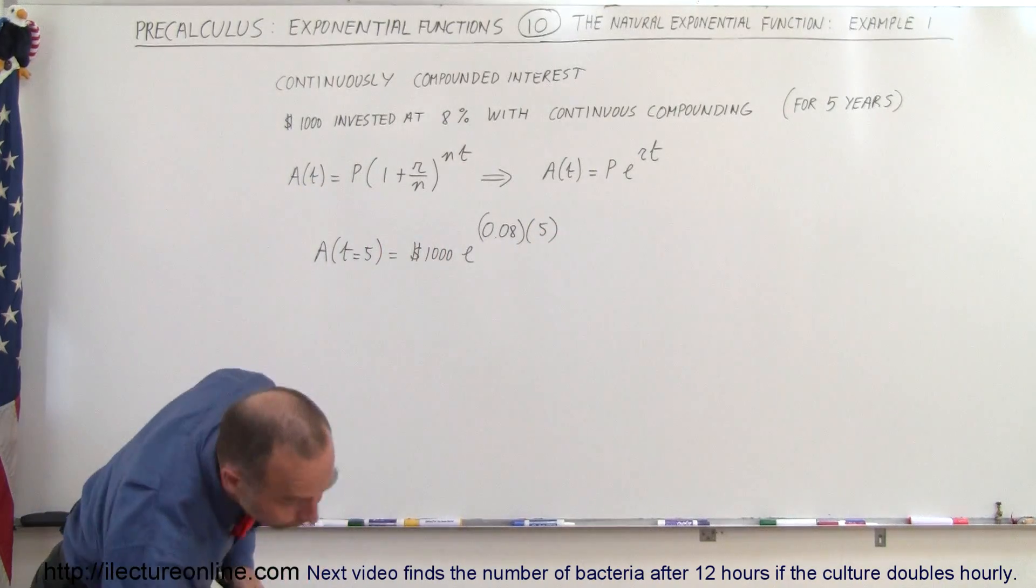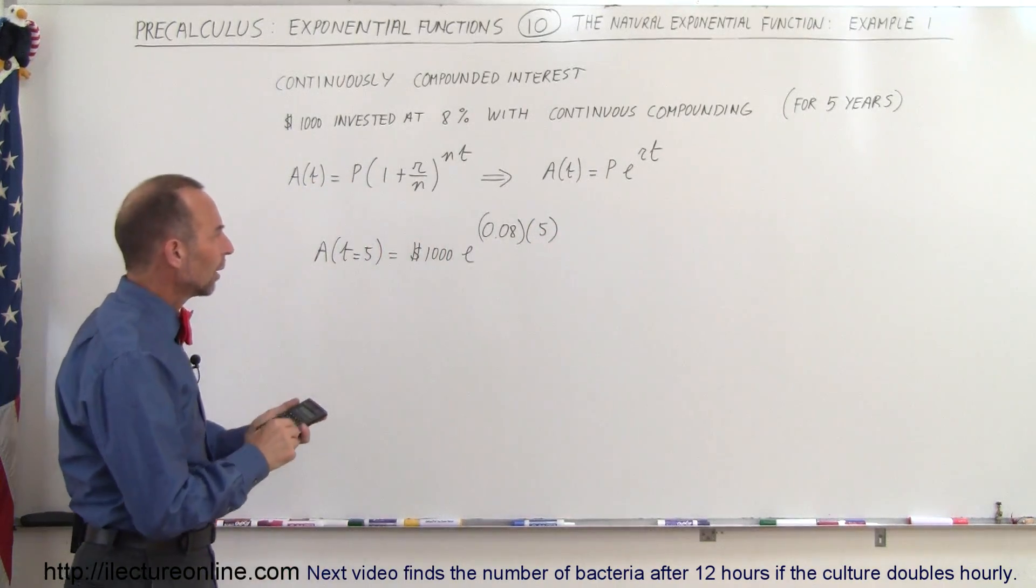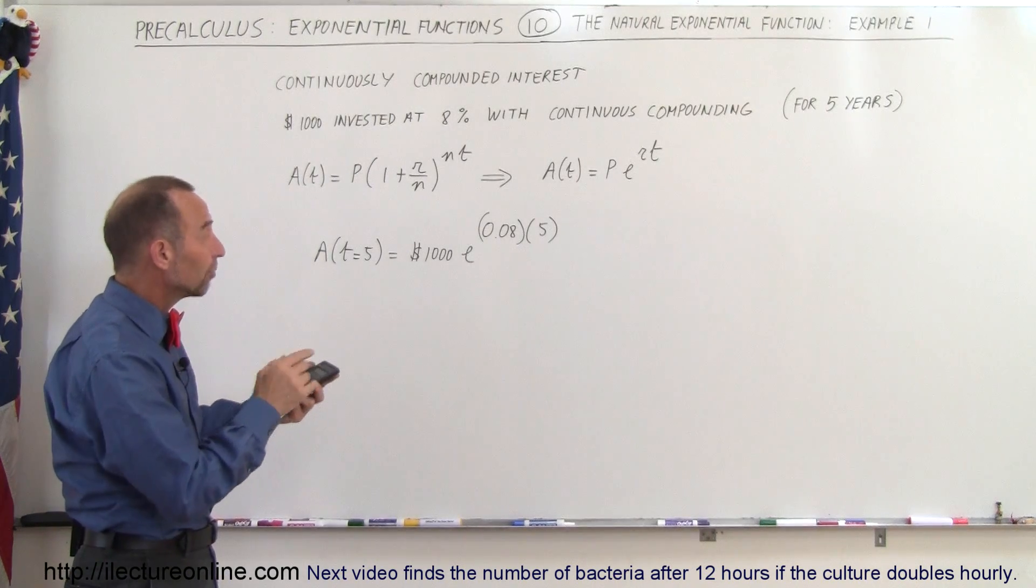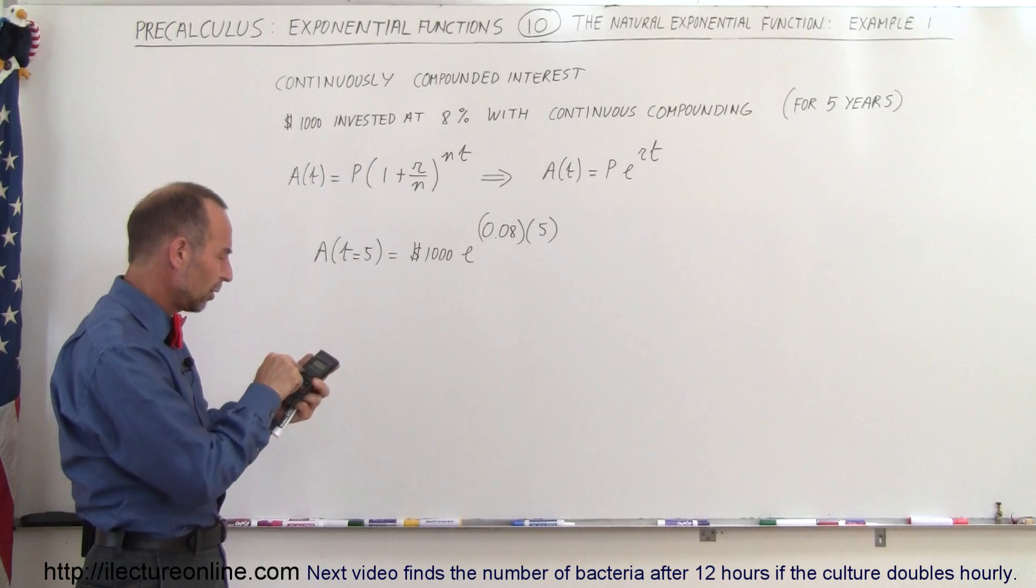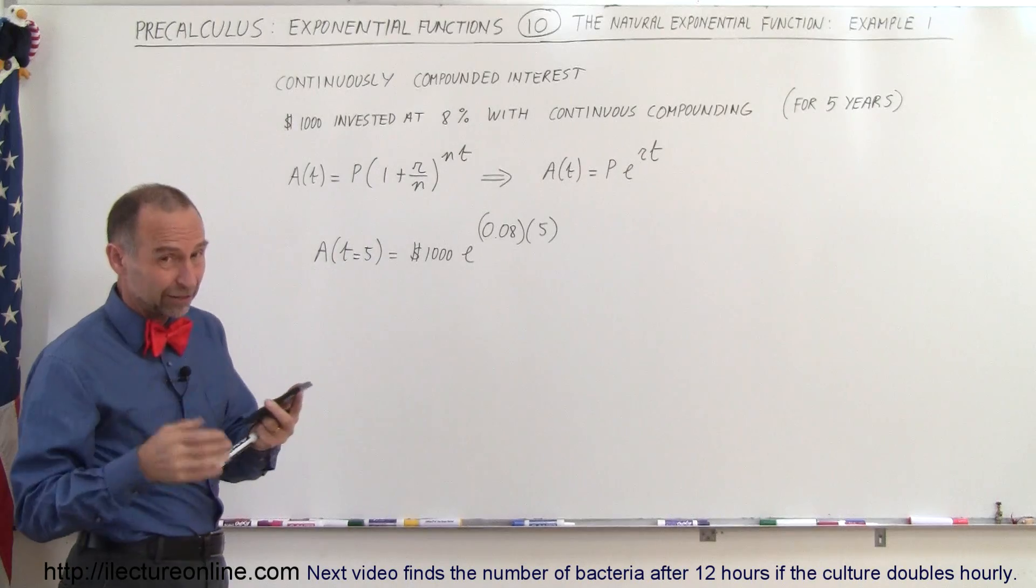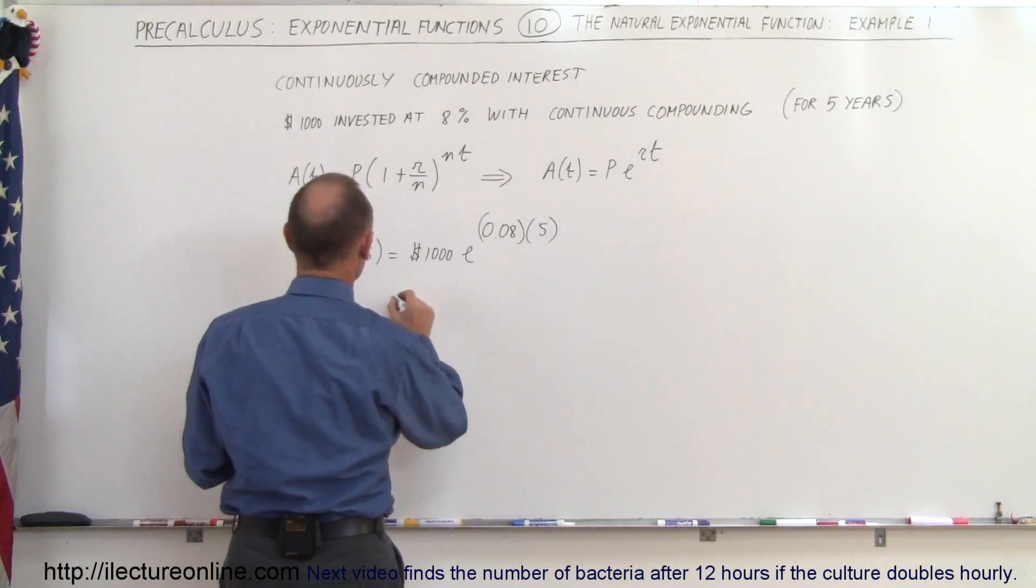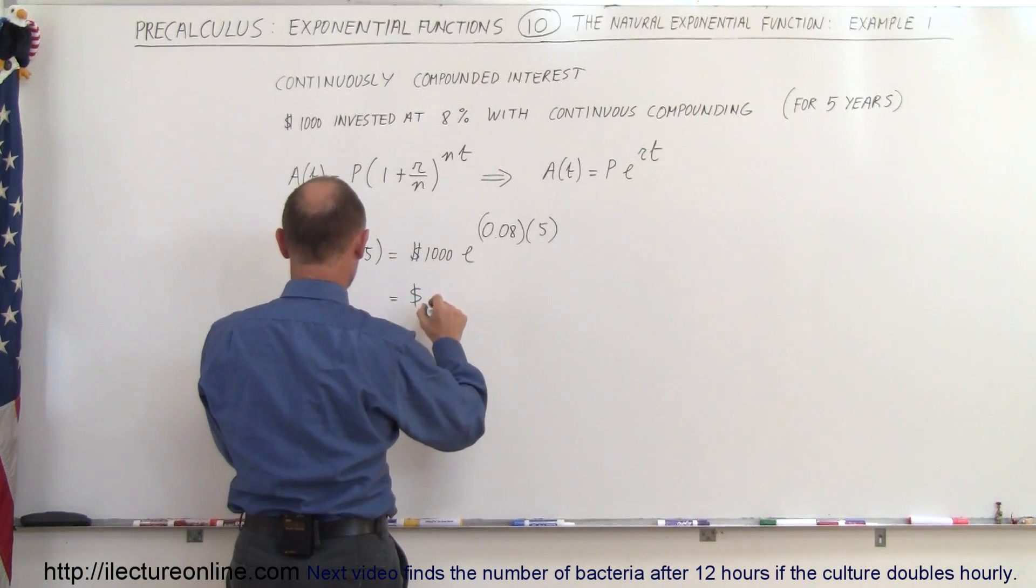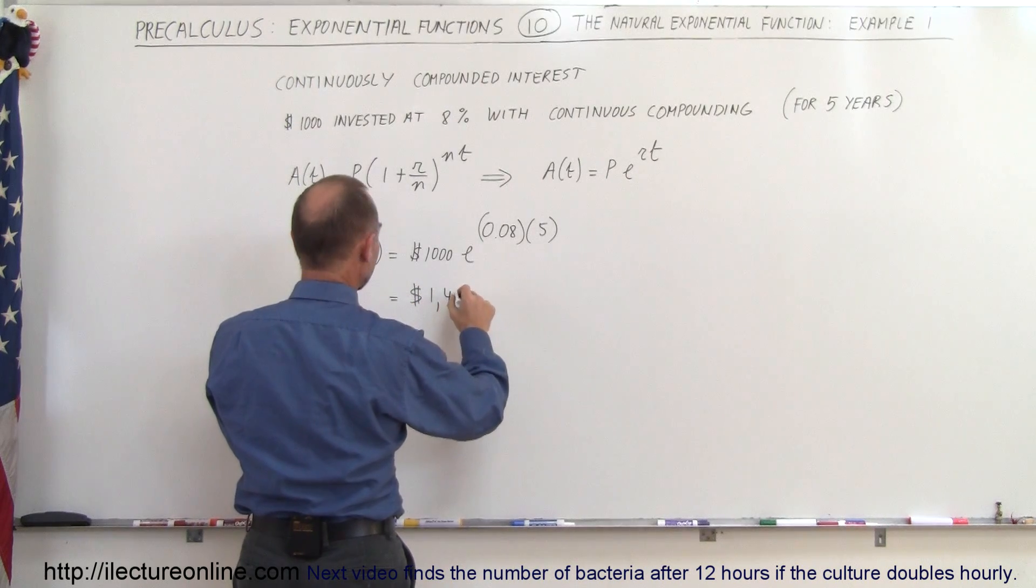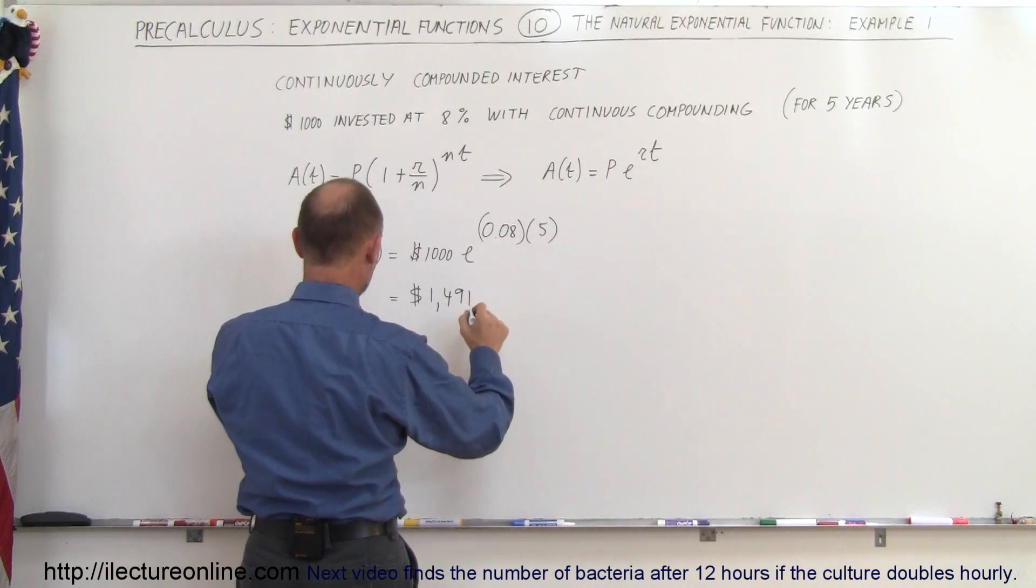And let's find out what it is equal to. So that would be five times 0.08 is 0.4, so we take 0.4, we use that exponent of e to the x, times 1,000. So of course calculators are very handy when it comes to these kind of things. So this is equal to $1,491.82.